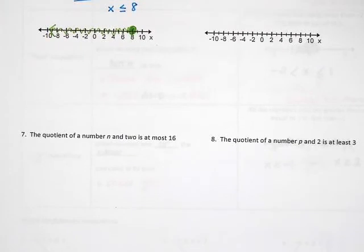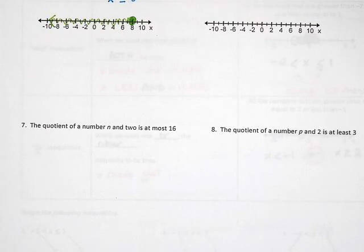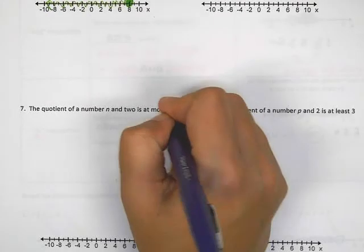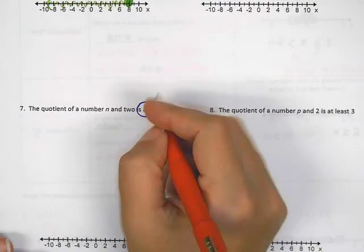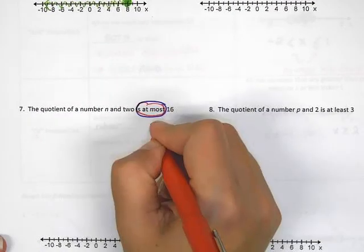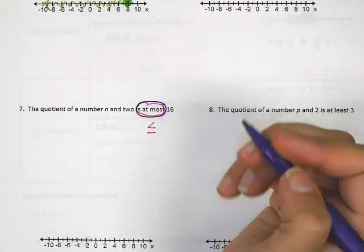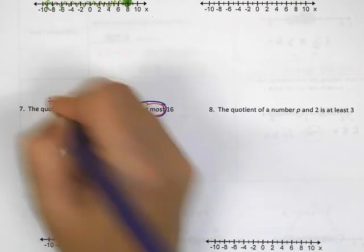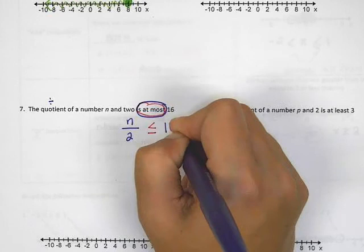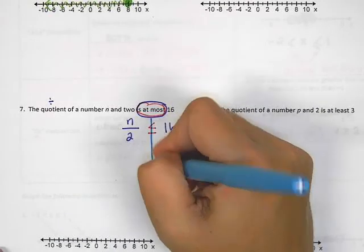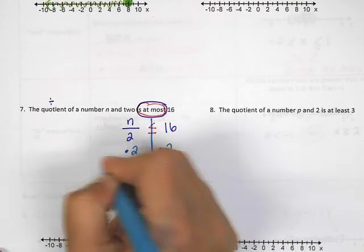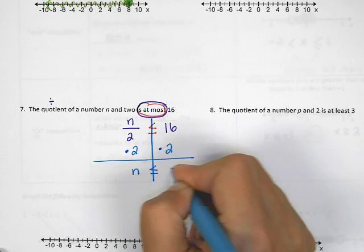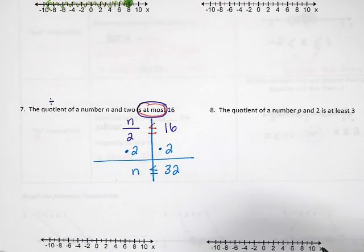We'll do number 7, saving 6 and 8 for class tomorrow. Number 7 says 'the quotient of a number n and 2 is at most 16.' 'Is at most' means less than or equal to. 'Quotient' means division, so n ÷ 2 ≤ 16. To solve, I multiply by 2 on both sides and get n ≤ 32. I won't graph this due to space, but I wanted you to see what 'at most' means in a word problem.